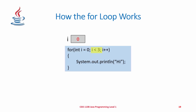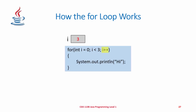Walking through the for loop: i starts at zero, we check if i is less than three — it is — so we print 'hi' to the screen, then increment i to one. We test again: i is less than three, so we print 'hi' and increment i to two. Test again: still less than three, print 'hi,' increment i to three. Now i equals three and is no longer less than three, so the condition evaluates false, we exit the for loop, and move on to the next statement.